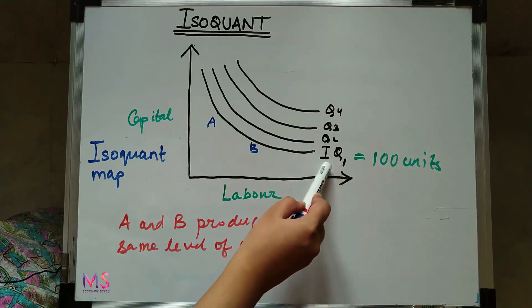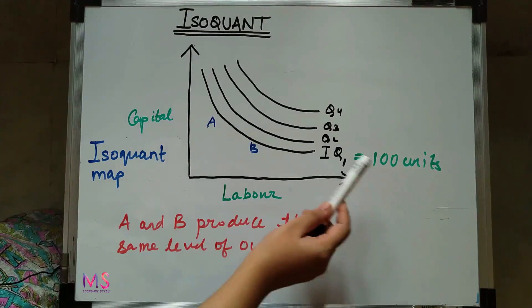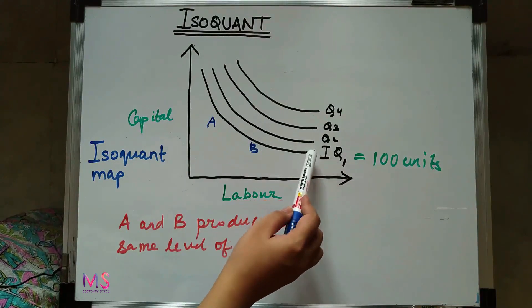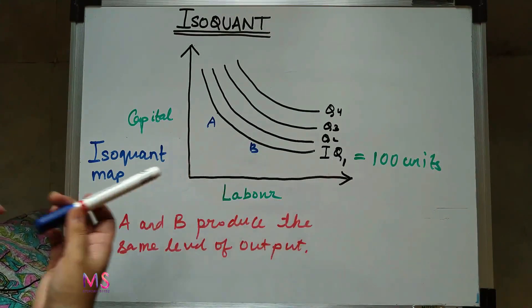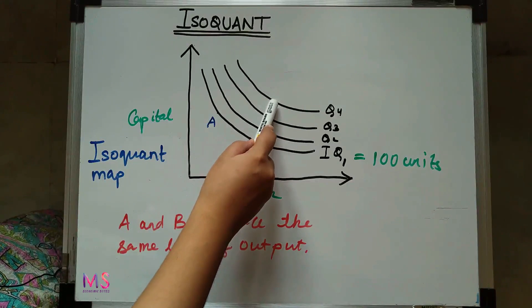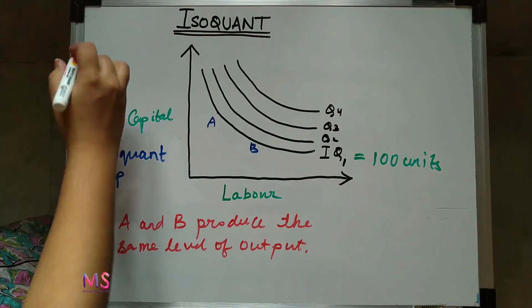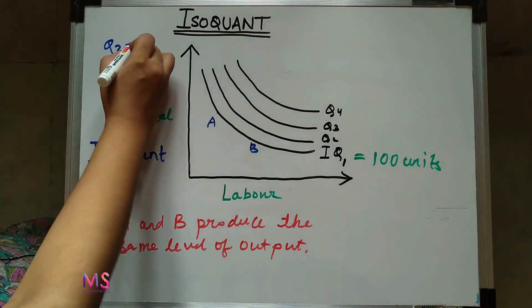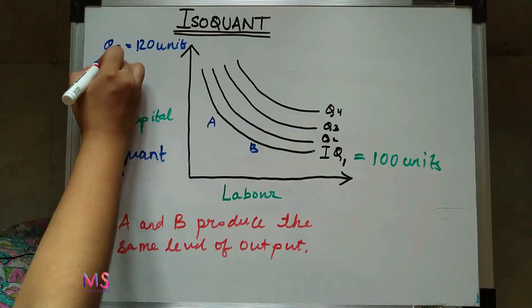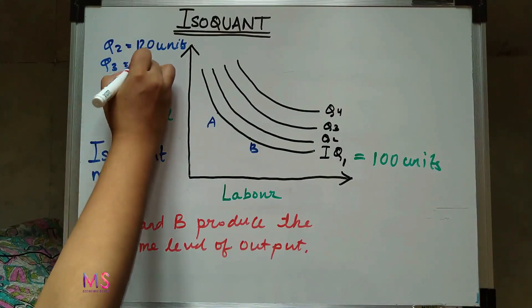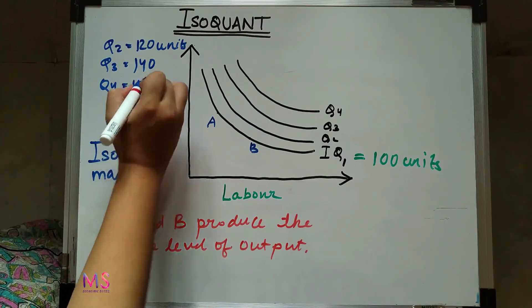For example, IQ1 depicts that 100 units of output is being produced. With each subsequent isoquant which is higher to the previous one, the level of output also increases. That means higher isoquants produce higher levels of output. We can quantify it: IQ2 produces 120 units of output, IQ3 produces 140, and IQ4 produces 160 units.